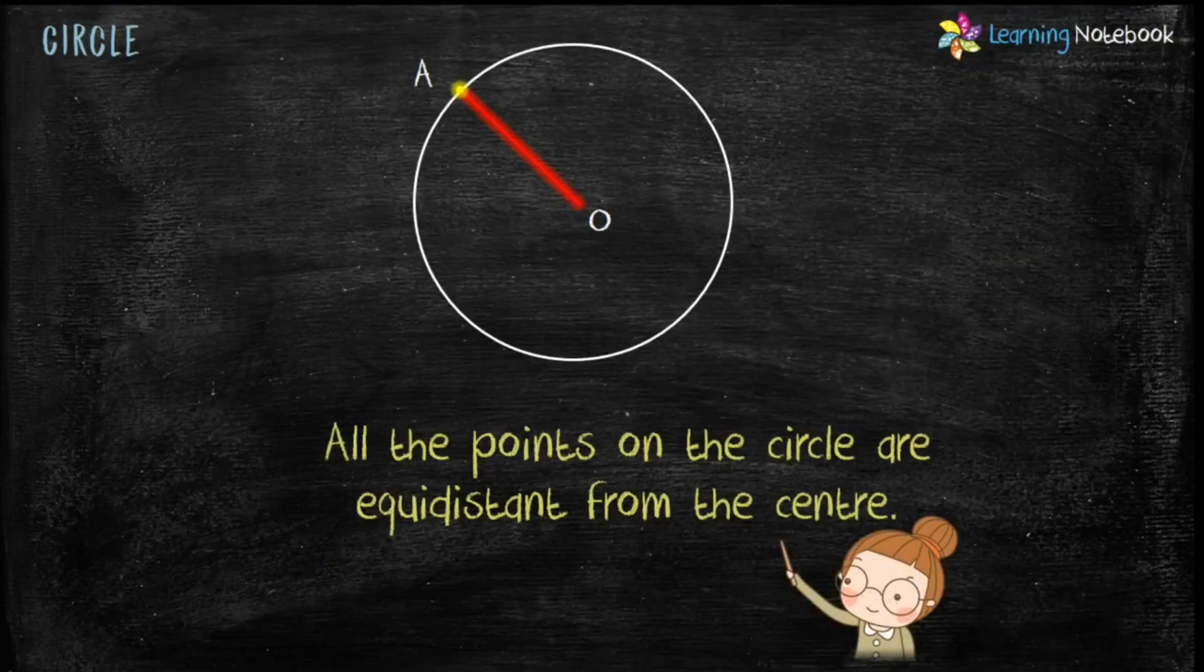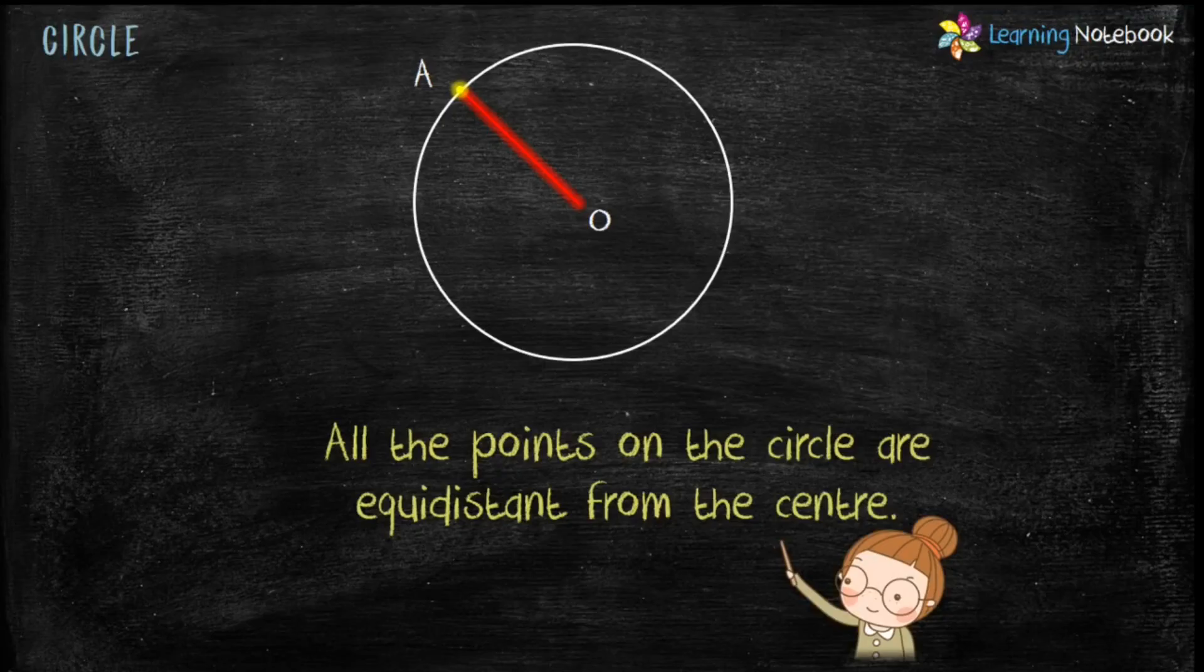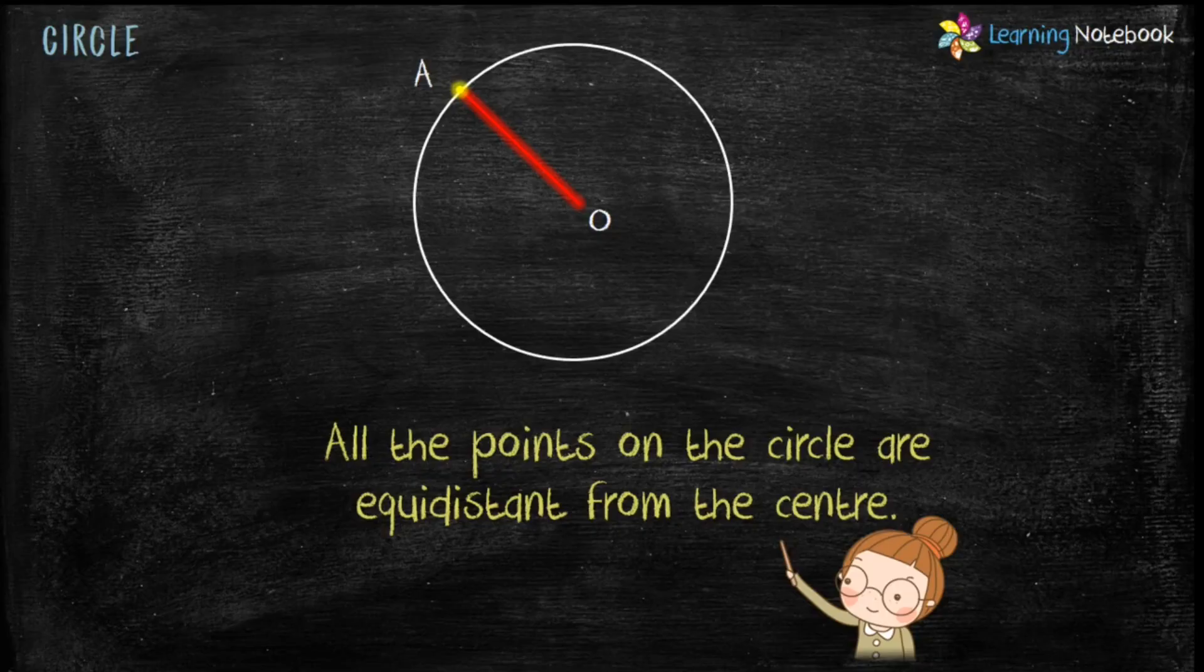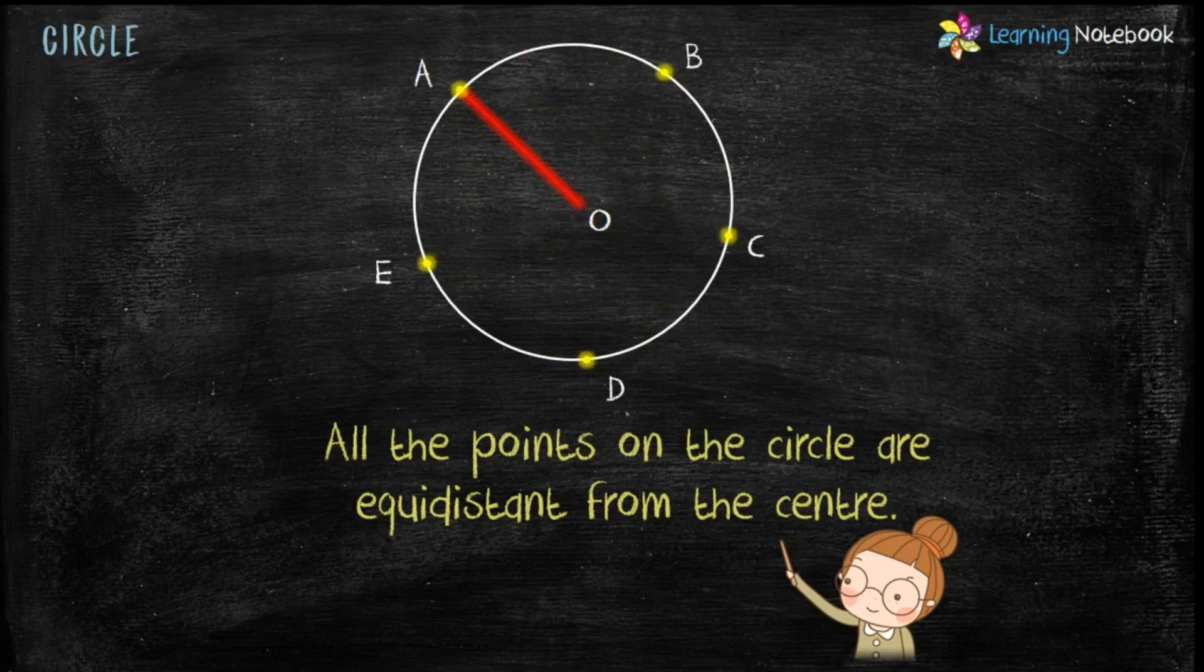All the points on the circle are equidistant from the center. Equidistant means equal distance. So here, all the points on the circle A, B, C, D and E are equidistant from center O.